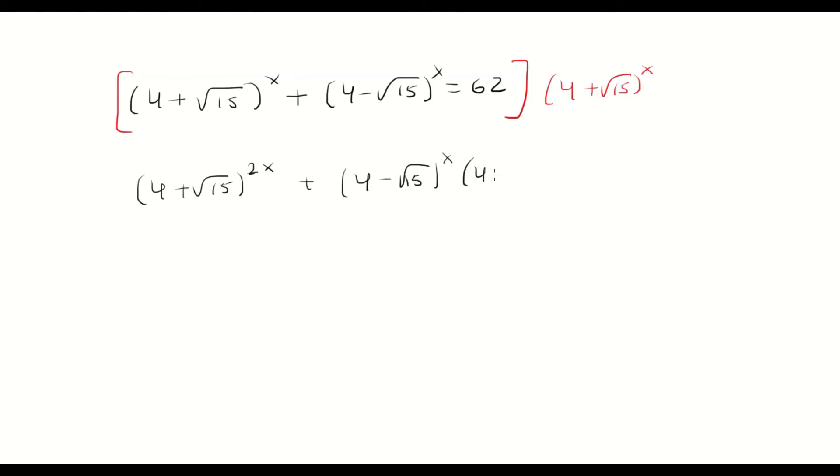Raised to the x times (4 + √15)^x equals 62 times (4 + √15)^x.